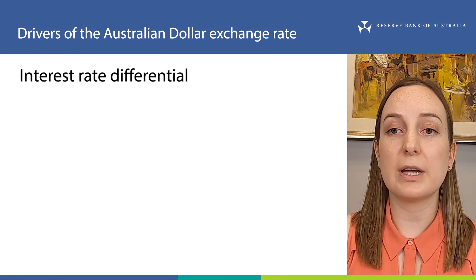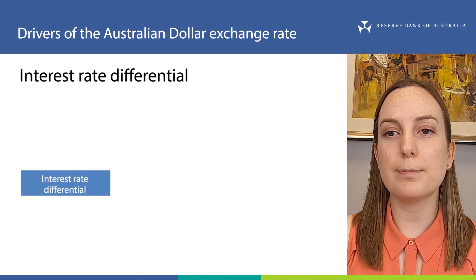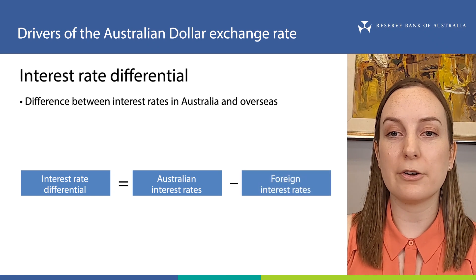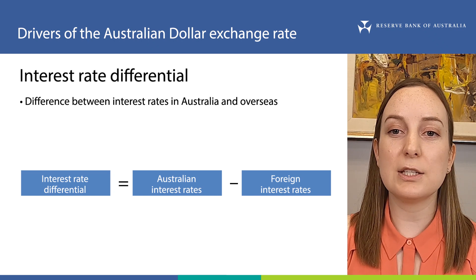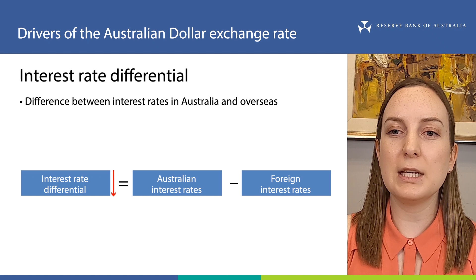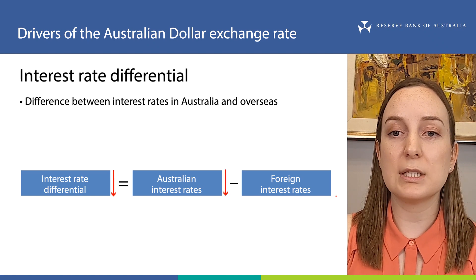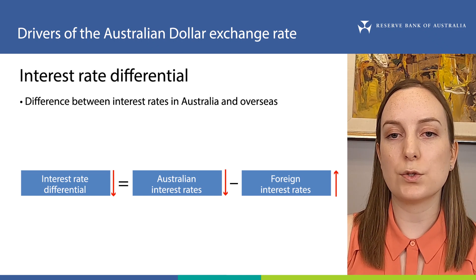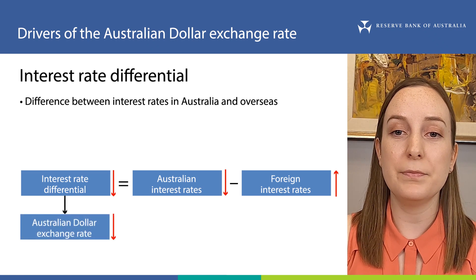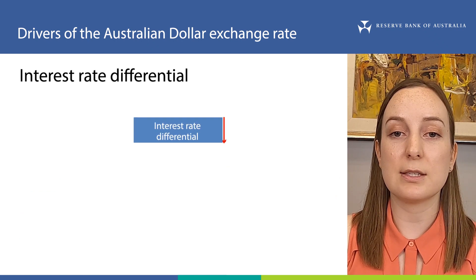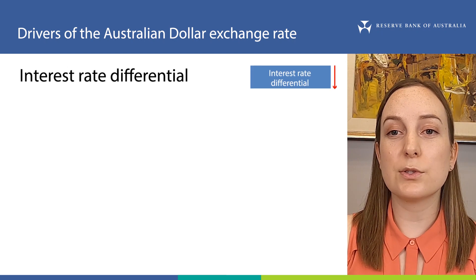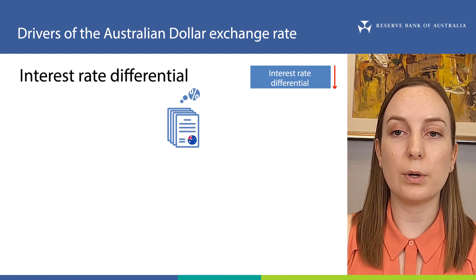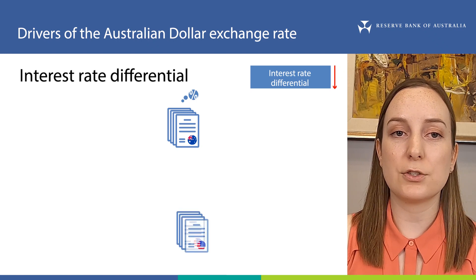First, let's talk about Australia's interest rate differential. The interest rate differential measures the difference between interest rates in Australia and those in other advanced economies, such as the US, Euro area, and Japan. If Australia's interest rate differential changes — say, decreases — this could mean interest rates have decreased in Australia, increased in other economies, or some combination of these. A decrease in Australia's interest rate differential would typically lead to a depreciation of the Australian dollar if this was the only factor that changed and everything else stayed the same. This is because Australian dollar assets that pay interest, such as government bonds, become less attractive for investors to hold since they receive a lower interest rate than before, compared with international assets.